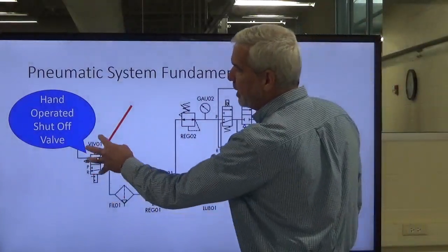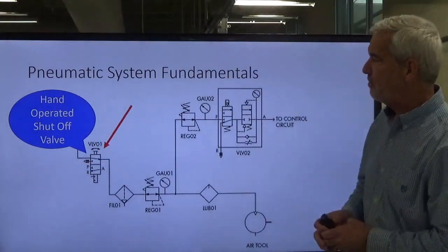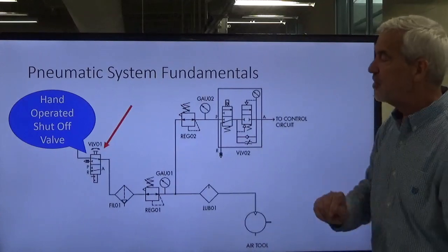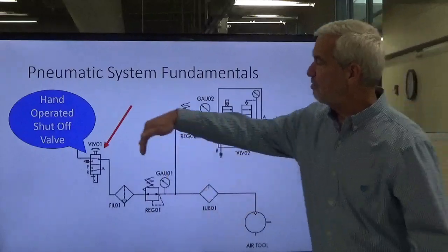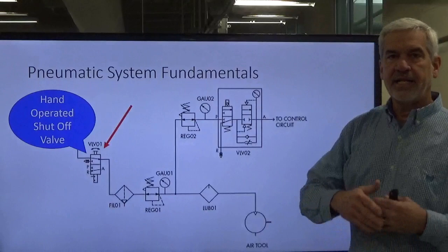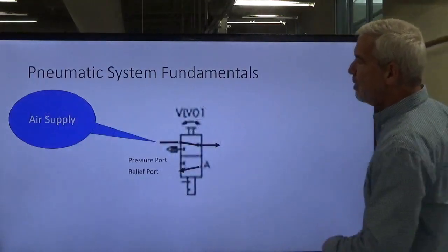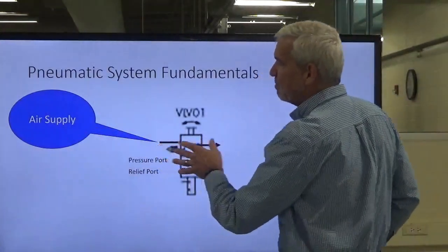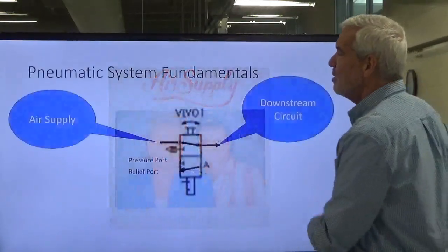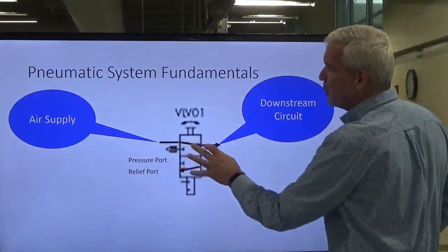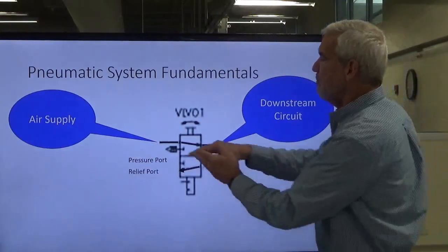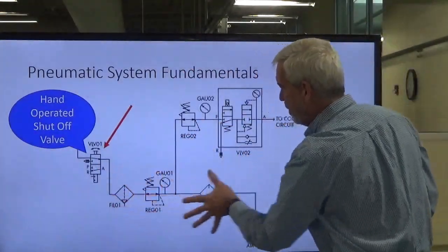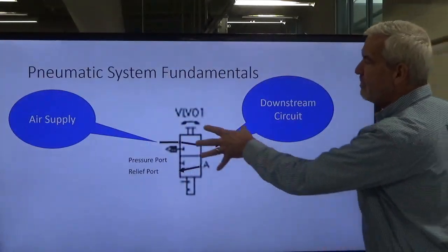The next component is a hand operated shutoff valve. This T handle gives us the symbol that it's hand operated. If I want to shut the pressure to my system down, I'd hit this valve and break the supply of air. We've got air supply coming into our shutoff valve, and as long as it's open, air passes through to our downstream circuit.